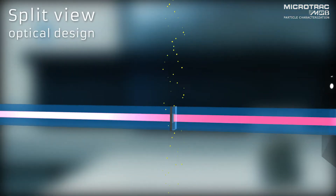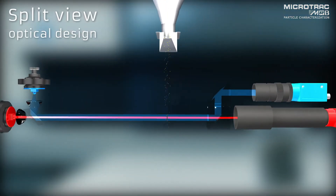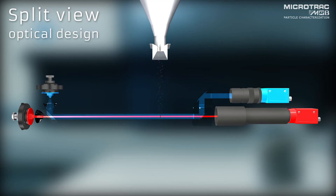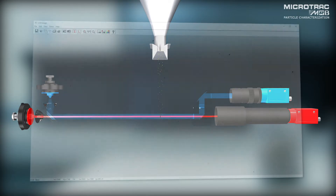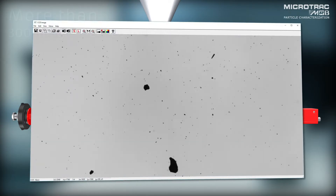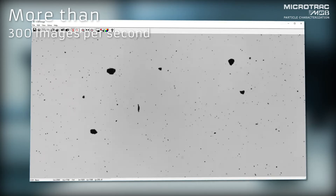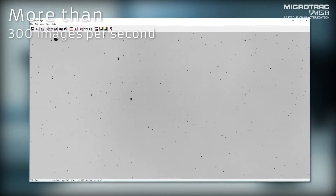The CamSizer X2 features a new innovative split view optical design in which both cameras share the same focal plane. The system records more than 300 images per second, with each image containing several hundred particles.